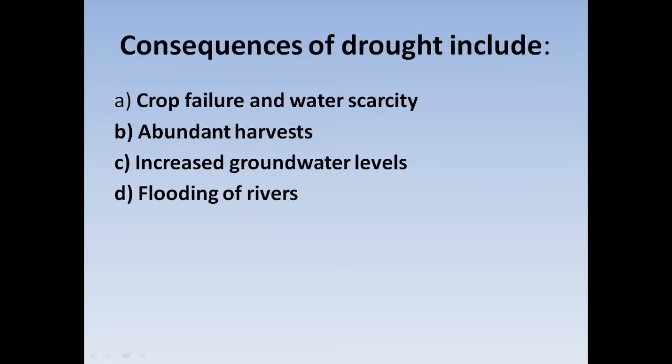Next question: The consequences of drought include — Option A: Crop failure and water scarcity, Option B: Abundant harvests, Option C: Increased groundwater level, Option D: Flooding of river. Consequences of drought include crop failure and water scarcity. Correct answer: Option A.